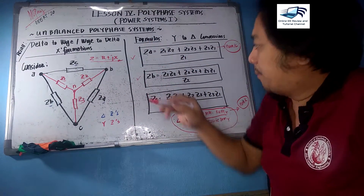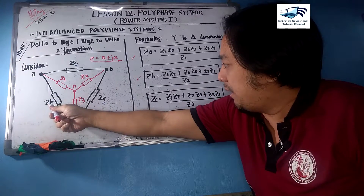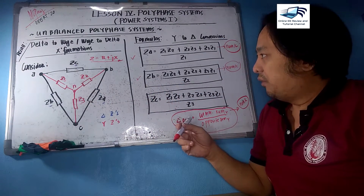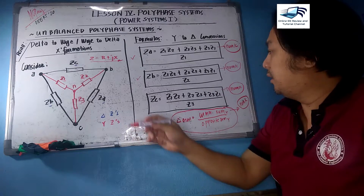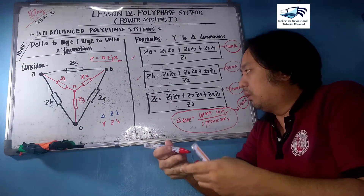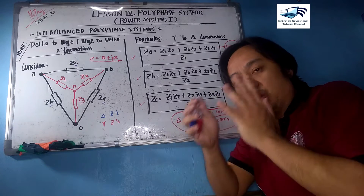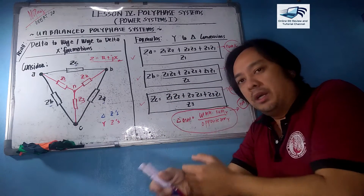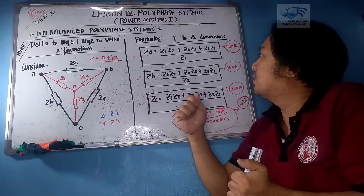For Zb, divide Num K by Z2, which is the opposite arm of Zb in the Y connection. For Zc, divide Num K by Z3. You can now get the delta-connected arms Za, Zb, and Zc, all expressed as complex numbers in rectangular form R + jX or in polar form Z∠θ. We will continue with the vice versa — delta-to-Y conversion.